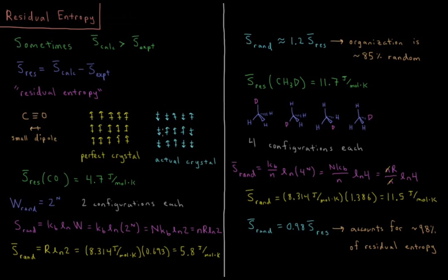So the entropy of just arranging these CO molecules randomly is approximately 1.2 times the actual observed residual entropy. So what this suggests is that the organization of this CO crystal is about 85% random, so some of them do align to minimize the repulsions of their dipoles to get the kind of favorable alignment there.